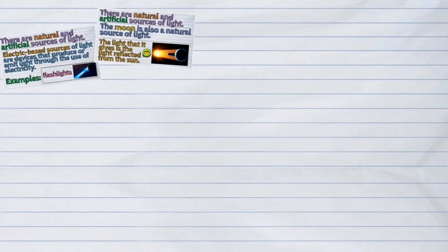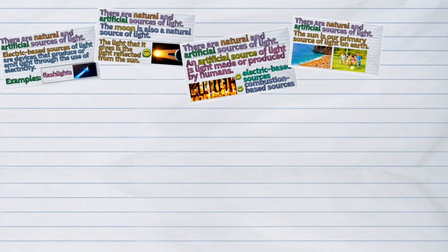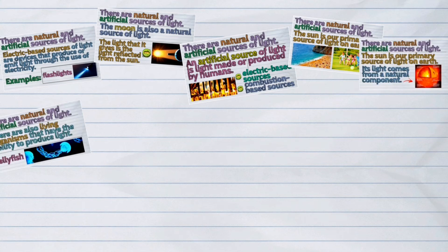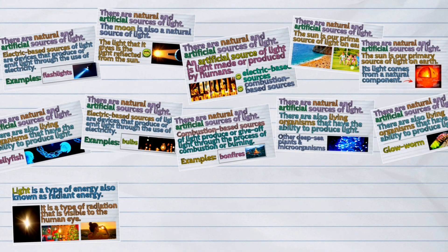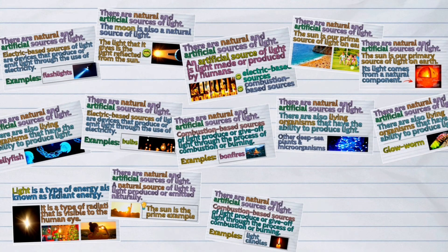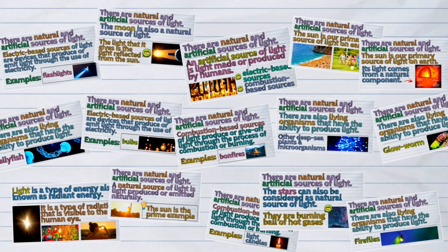And that was the definition of light and its sources. Again, light is a type of energy also known as radiant energy. The sources of light are natural and artificial.